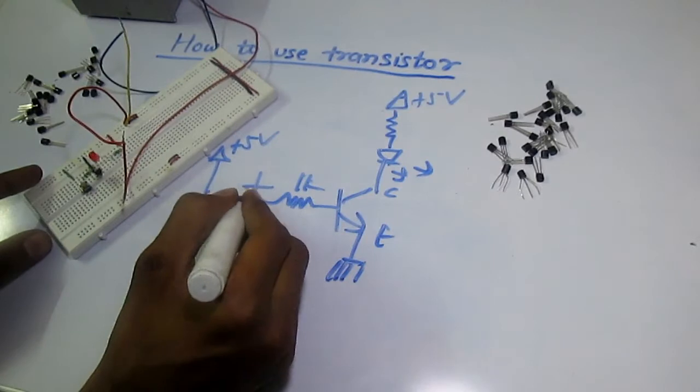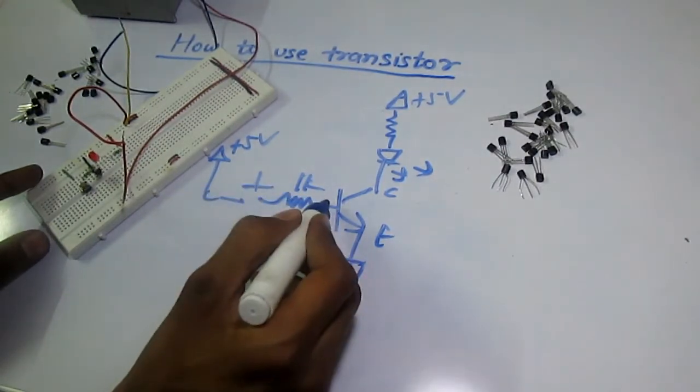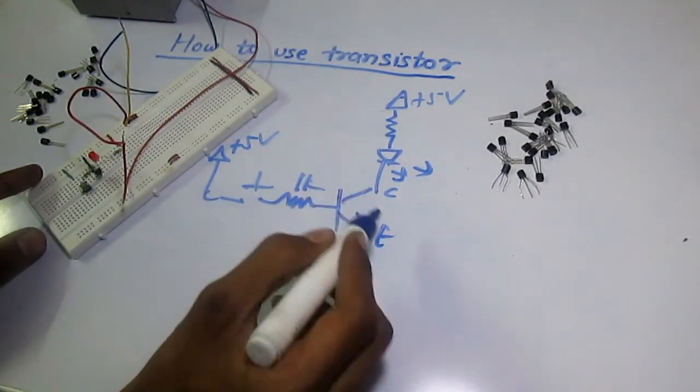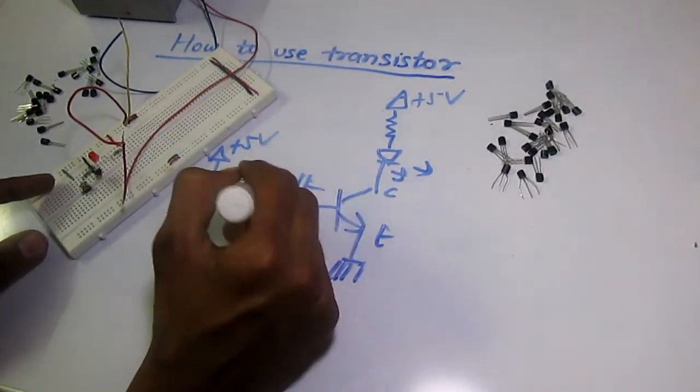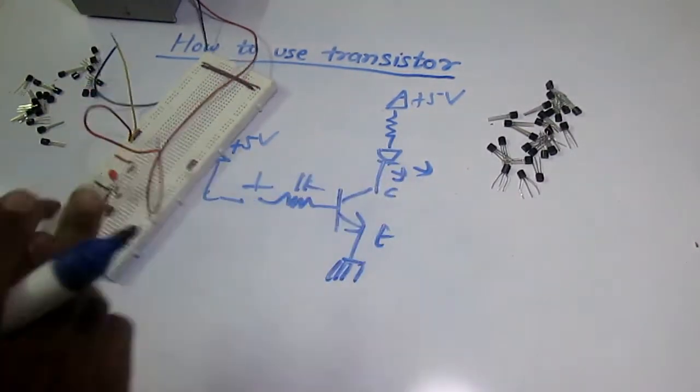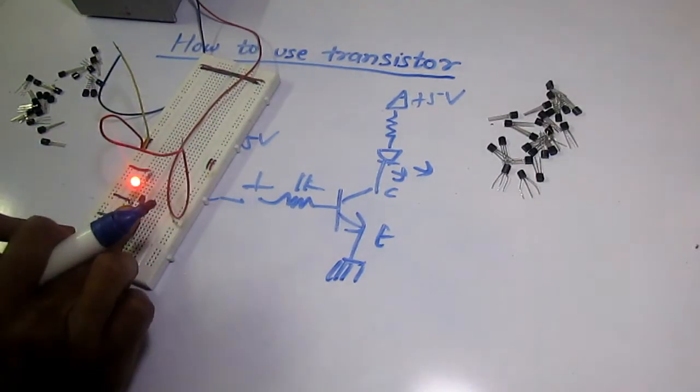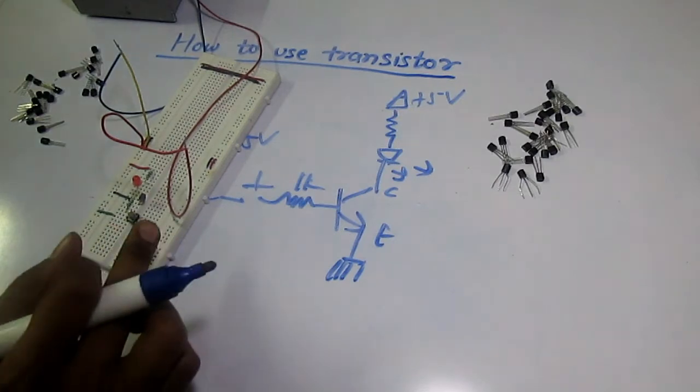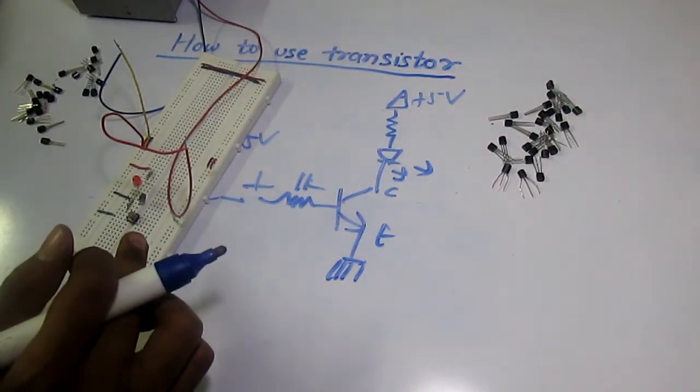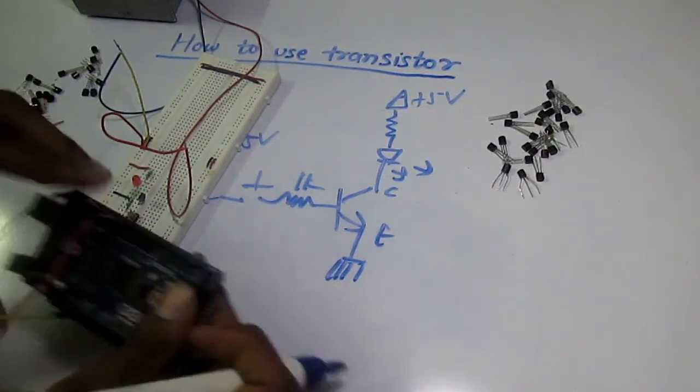Whenever I press the switch, the base will turn on the transistor and the LED will turn on. If the switch is off, the LED will be off. So if I press the switch, LED is on - if I release the switch, LED is off. We'll do the same thing using a microcontroller.